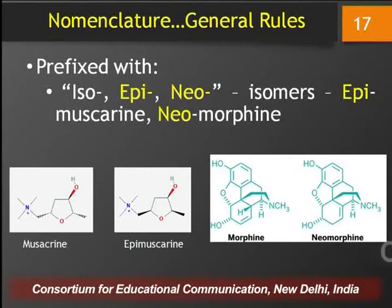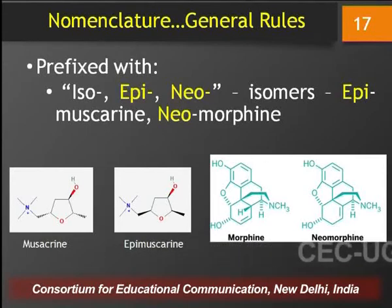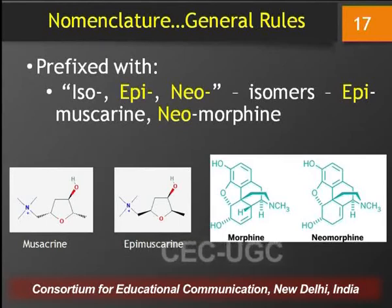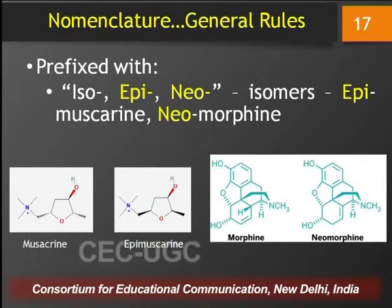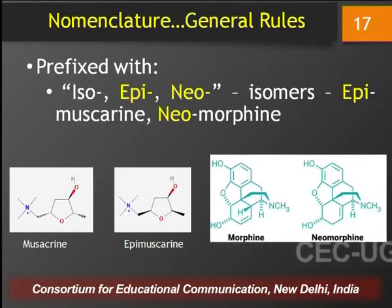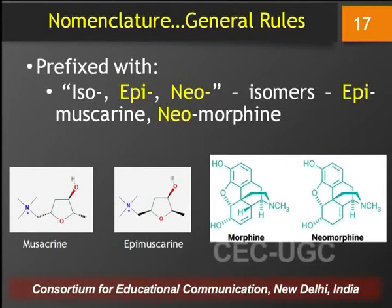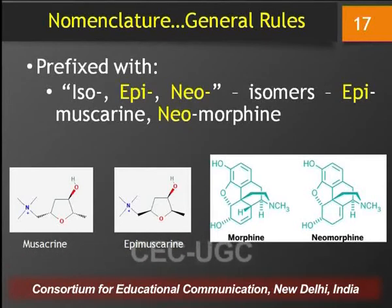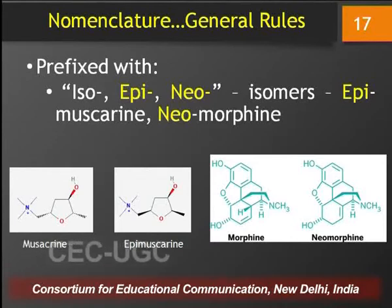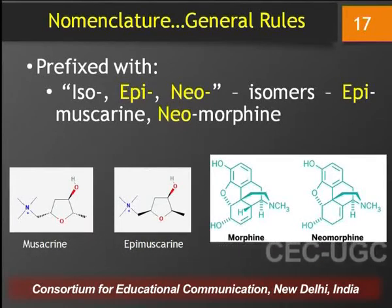If the name of the alkaloids is prefixed with iso, epi or neo, these also indicate different types of isomers. Examples are epimuscarine and neomorphine: epimuscarine is an isomer of the alkaloid muscarine, whereas neomorphine is an isomer of morphine. As you can see in the structures of muscarine and epimuscarine, the only difference is in the type of bonds on the tetrahydrofuran ring — the bond attaching to the quaternary nitrogen atom and the bond to which the methyl group is attached. In muscarine these are below the plane and in epimuscarine these are above the plane. In morphine and neomorphine the only difference is in the positioning of the double bond in the third ring of the structure, which is why these are considered isomers.